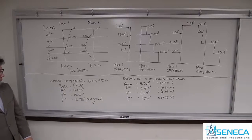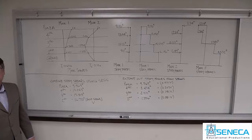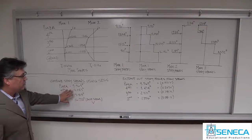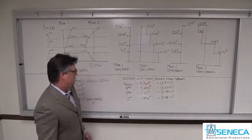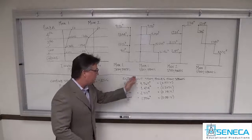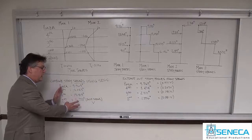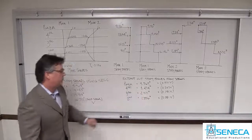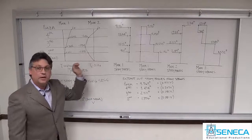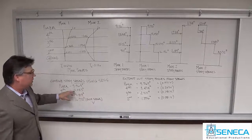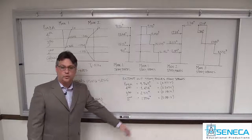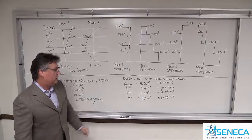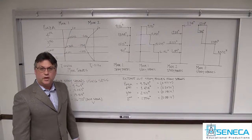What the code then does with this information is extract out the story forces. But the important thing is these forces are the set that creates the story shears you want to design for. These are not necessarily forces derived as happening simultaneously at each level. These are just the forces extracted to make sure you envelope the story shears — they are all assumed to be acting at one time. This force by itself doesn't make any sense without all the other forces acting simultaneously on the building.